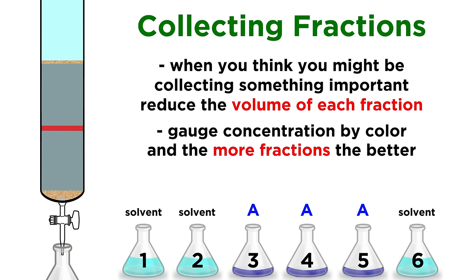Combine all the winning fractions in a flask suitable for a rotavap, evaporate the solvent away, and there you have your product, purified and isolated. Now you're ready to get an NMR spectrum, and know for sure if your reaction went as planned.